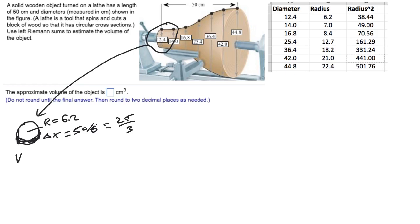So the volume of this one slice is approximately pi times 6.2 squared times 25 thirds. That's the approximate volume of this piece when I pull it out and set it over there. Well, now we can see what to do for every slice.